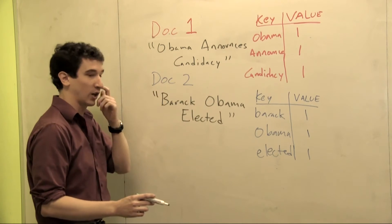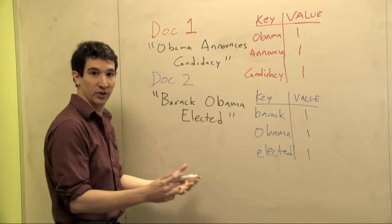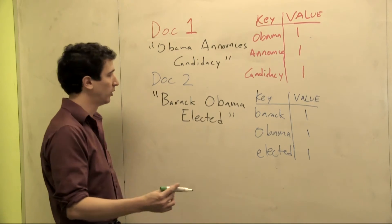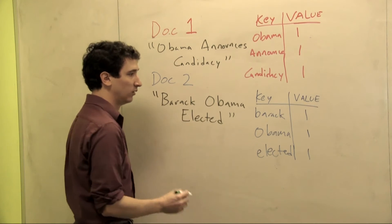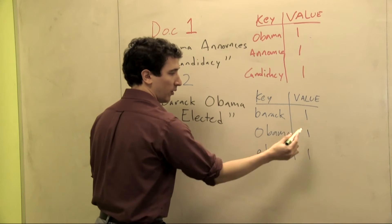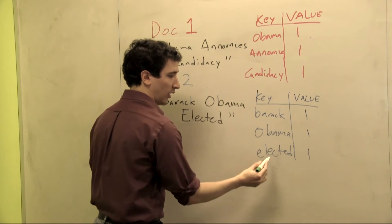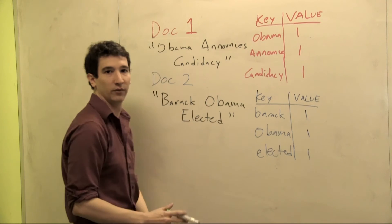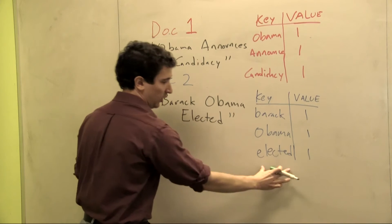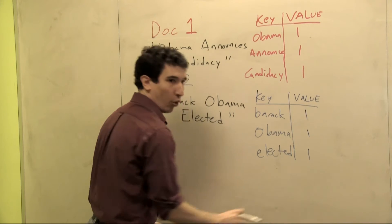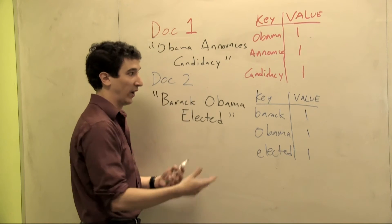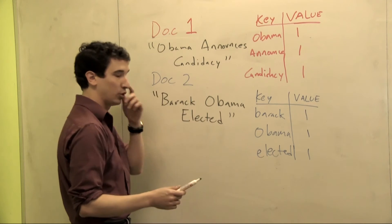Then we come across document two, and we can represent that with a whole new hash table. 'Barack Obama elected' — Barack maps to one, Obama maps to one, elected maps to one. And if it also said 'president,' we'd add more and more keys and keep track of the value associated with each one.